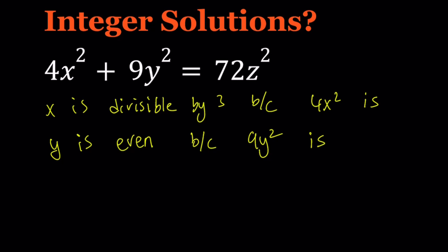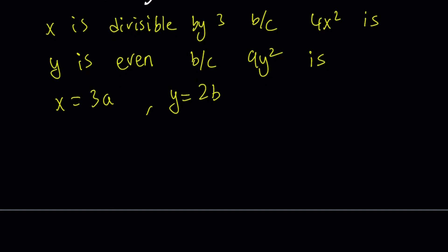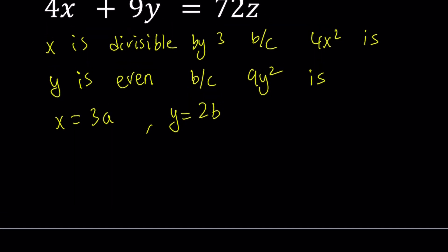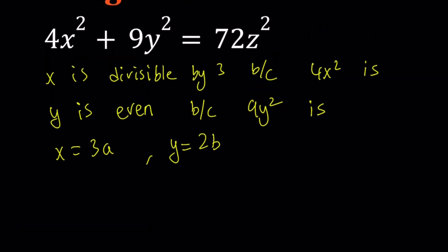Having established those two things, we can go ahead and substitute. We can write x as 3a, where a is an integer, and y as 2b, because y is even. So let's plug these into our original equation. Replacing x with 3a gives 36a squared, and replacing y with 2b gives 36b squared. That sum is equal to 72z squared.